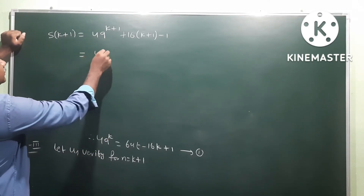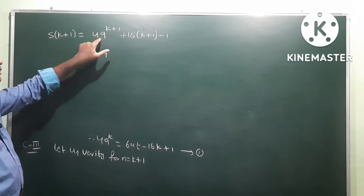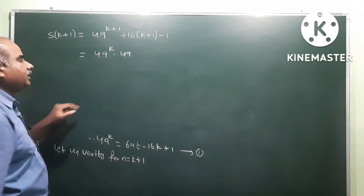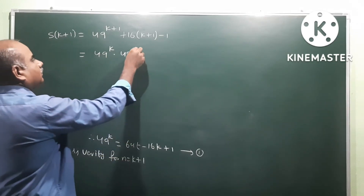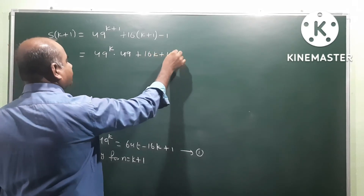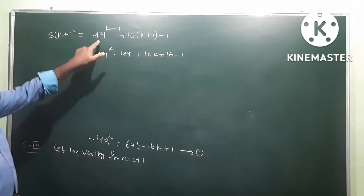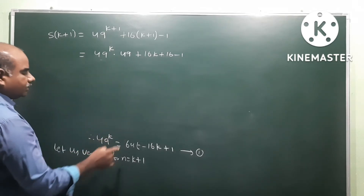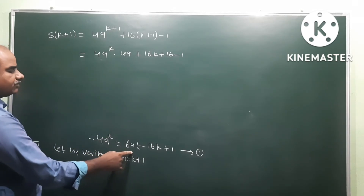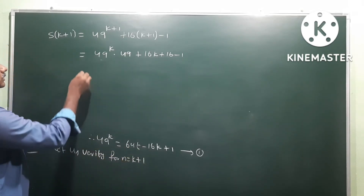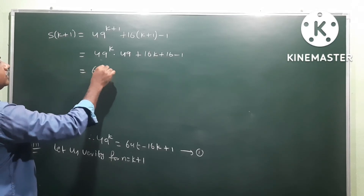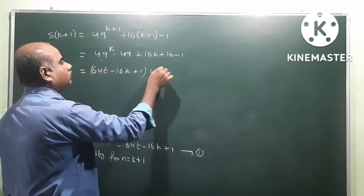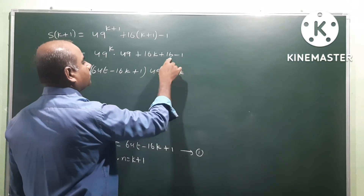We expand 49^(k+1) using the rule a^(m+n) = a^m · a^n, giving 49^k × 49^1 = 49^k × 49. Then expanding 16(k+1) - 1 gives 16k + 16 - 1 = 16k + 15. Substituting 49^k = 64t - 16k + 1, we get (64t - 16k + 1) × 49 + 16k + 15.